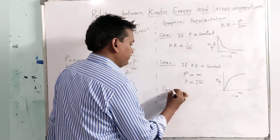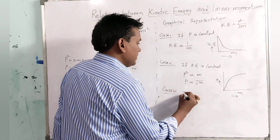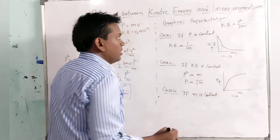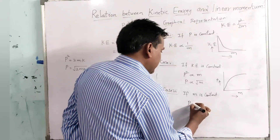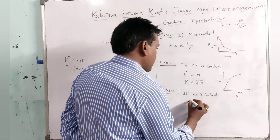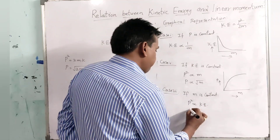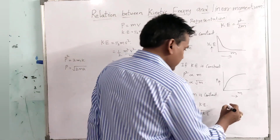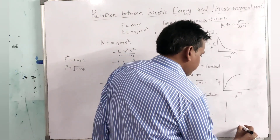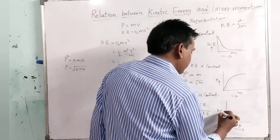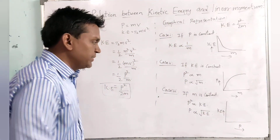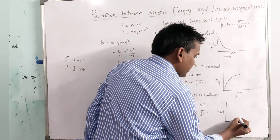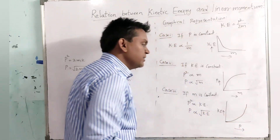Case 3: if mass is constant, then P squared is directly proportional to KE, and P is directly proportional to the square root of KE. The graph of momentum versus kinetic energy will show this relationship. As mass is constant, if momentum increases, kinetic energy also will increase along with the momentum.